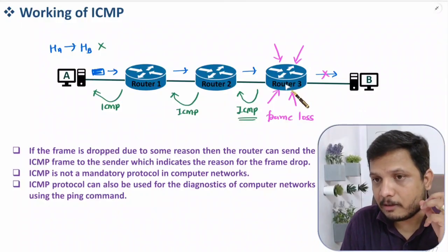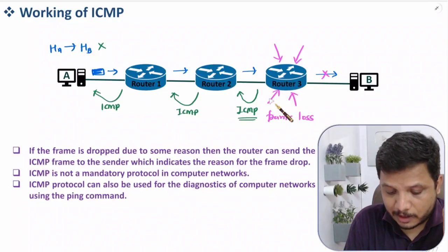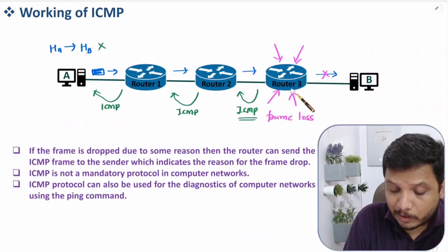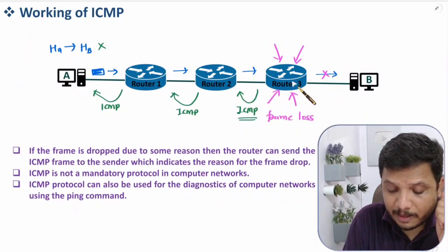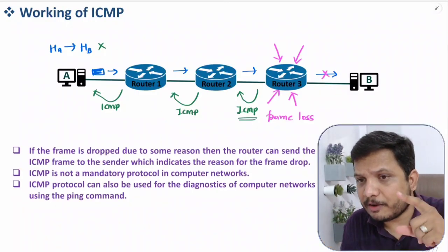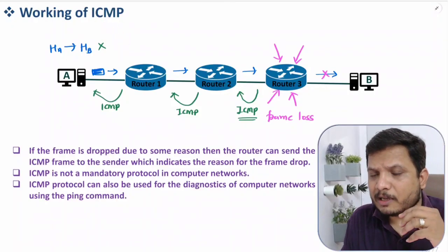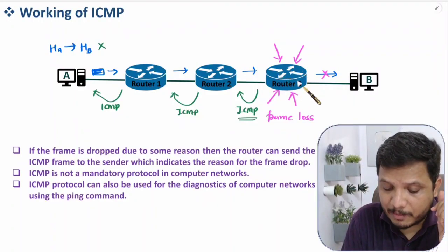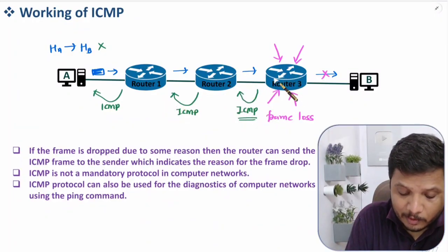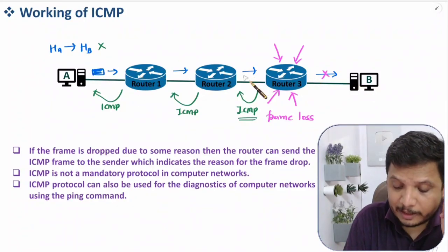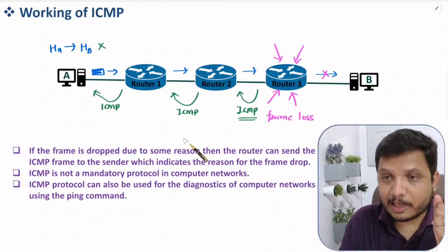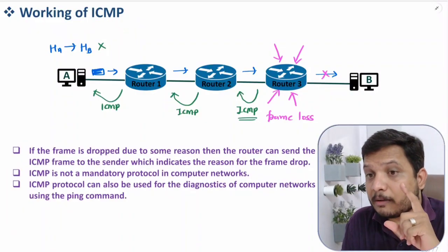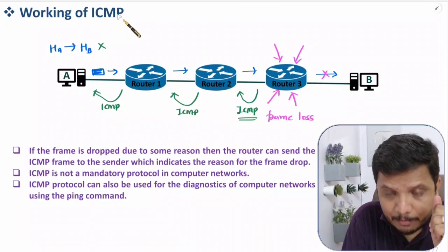The ICMP frame tells Host A that it will have to retransmit the frame or find some other path, because Router 3 is currently busy. Router 3 knows the frame could not be forwarded, so it generates the ICMP frame and includes the reason why the frame could not be forwarded. In the next video I'll explain at least 10 to 15 reasons practically. Remember, ICMP is optional and by ICMP we improve reliability.